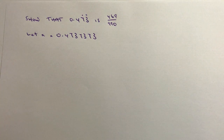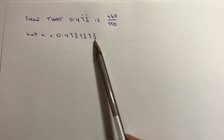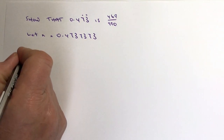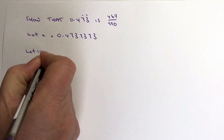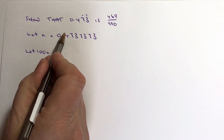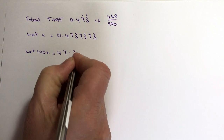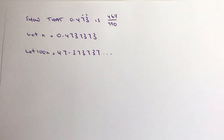What I need to do is find a way to get rid of all of this recurring. If I multiply this value of n by 100, then I'm going to move the decimal point two places. So if I move the decimal point two places, what I end up with is 47.373737 and so on.